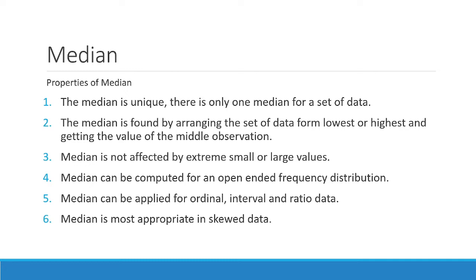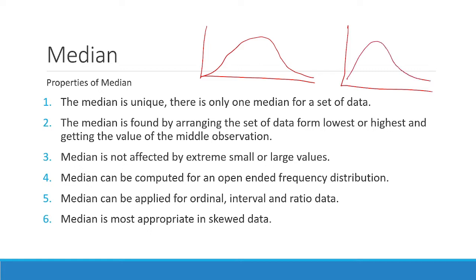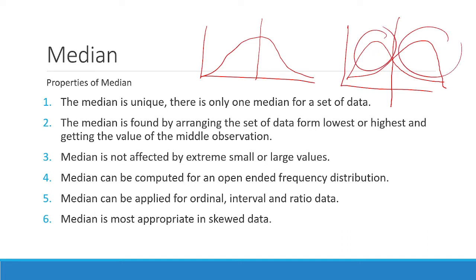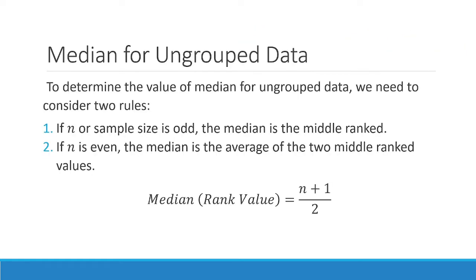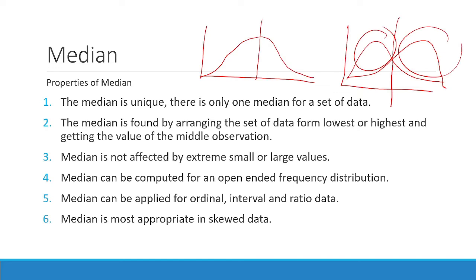By skewed data, it means the data has a certain bias. Asymmetrical data follows a certain curve where most of the data lies in the middle of the graph. When we say skewed, the data is either biased toward the left side or toward the right side — the majority of observations are not centered. That is all for the properties of median.